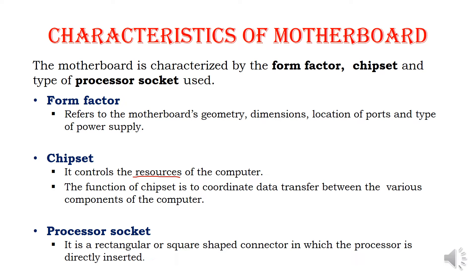The chipset coordinates data transfer from one device to another device. This is used to control the computer. Then, processor socket. A processor socket is a socket which is used to connect a processor into the motherboard directly. It will be in the shape of a rectangular or square-shaped connector. So it is used to connect a processor to the motherboard.